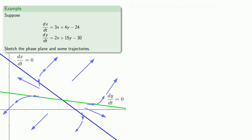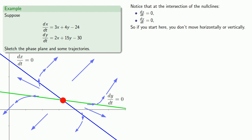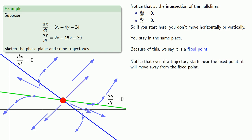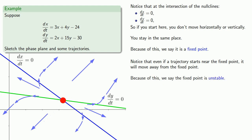One final note: at the intersection of the null clines, dx/dt is zero and dy/dt is zero. So if you start here, you don't move horizontally and you don't move vertically — you stay in the same place. Because of this, we say that this intersection point of the null clines is a fixed point. There are different flavors of fixed points. Here the important idea is that even if a trajectory starts near the fixed point, it will move away from the fixed point. Because of this, we say the fixed point is unstable.